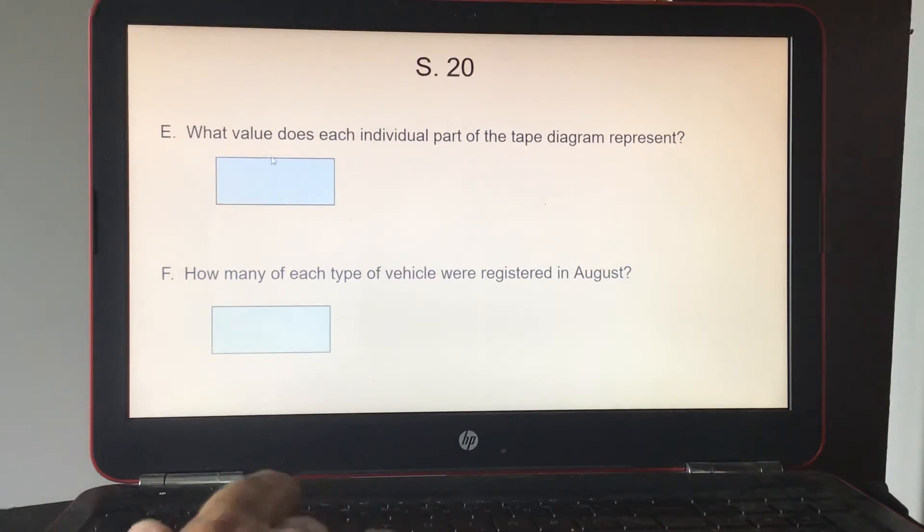E, what value does each individual part of the tape diagram represent? So if you don't understand that, it just means what each one little box means. What is it representing? And this was registered vehicles, right? So it would mean one of them. F, how many of each type of vehicle were registered in August? So you could go back to that slide. We were multiplying by 16.